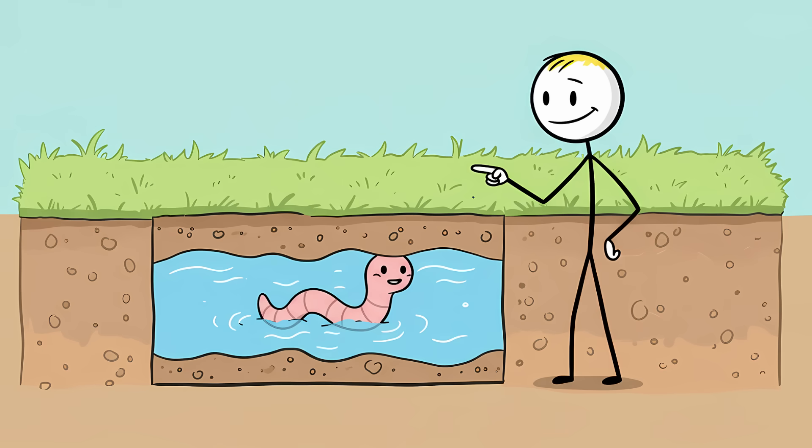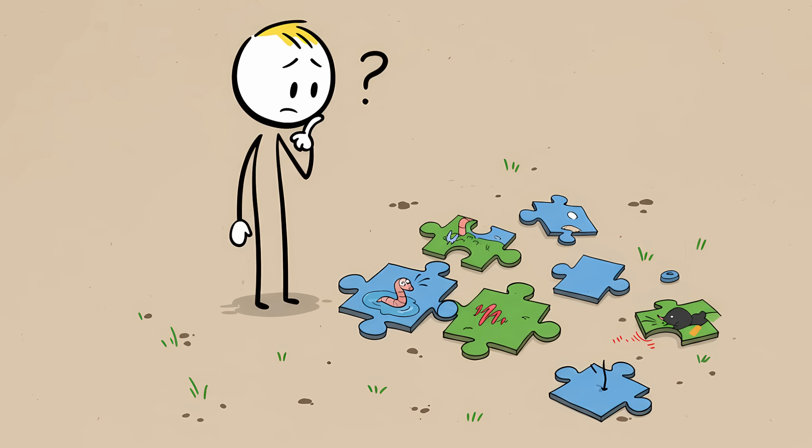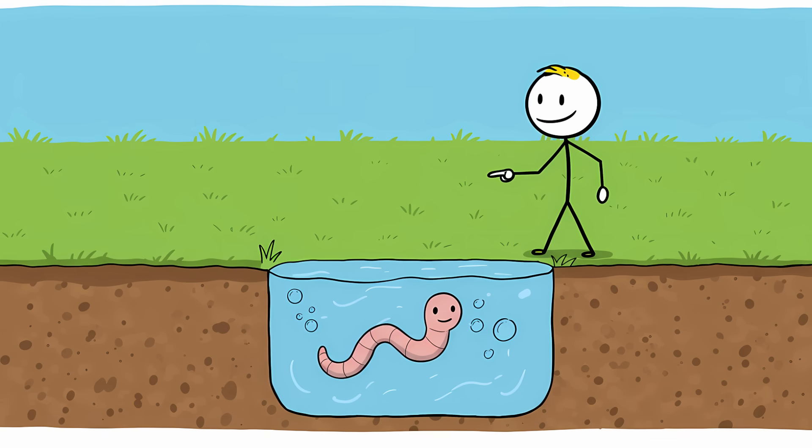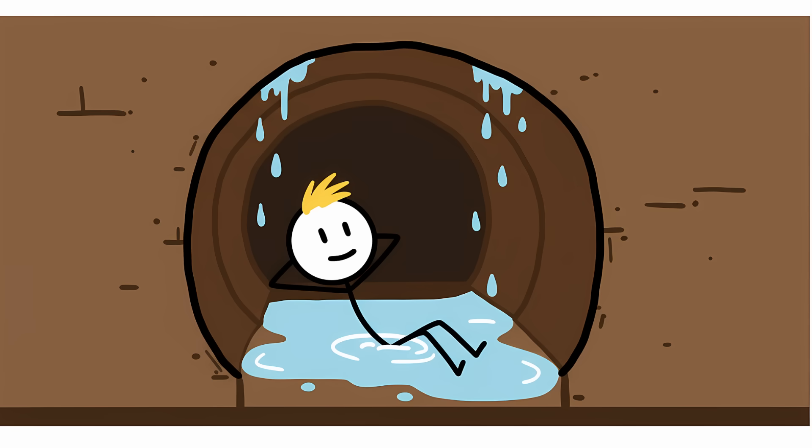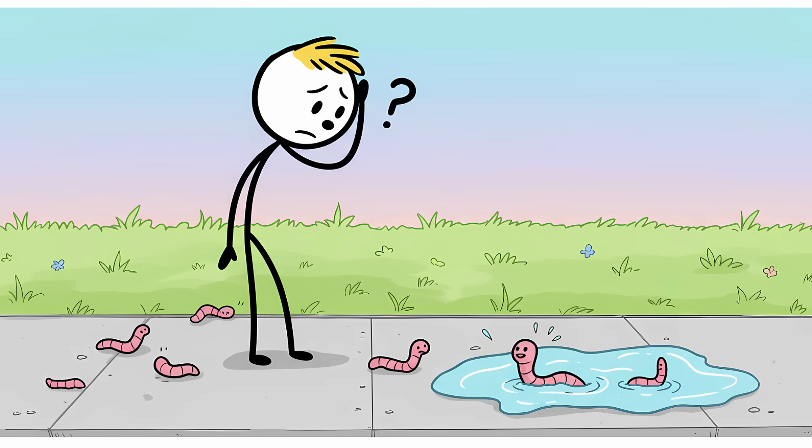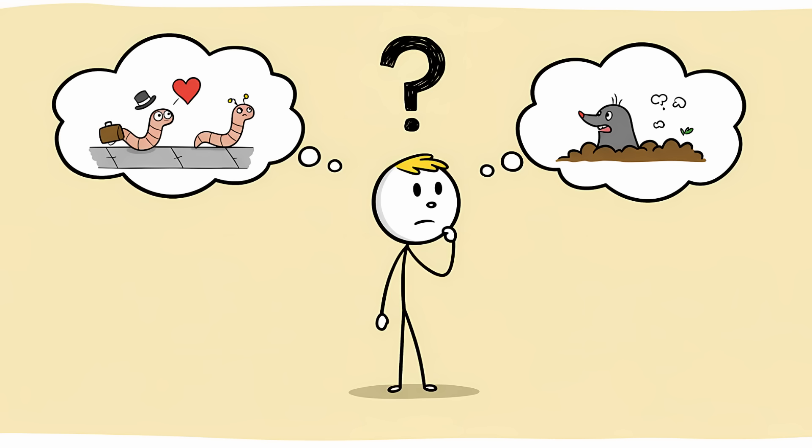While the logic is sound, it's not the whole story. Earthworms can actually survive submerged in water for several days, as long as the water has enough oxygen in it. They aren't gasping for air the moment their tunnels get a little damp. So if they're not escaping a flood, what are they doing? There are a couple of leading theories.